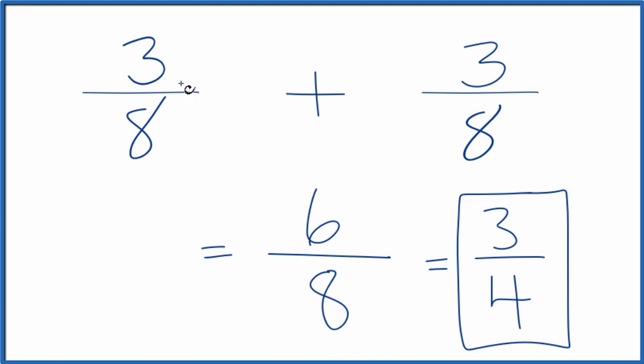This is Dr. B adding the fractions 3 8ths plus 3 8ths. You get 3 4ths, or you could say 6 8ths as well. These are equivalent. Thanks for watching.